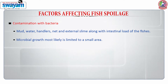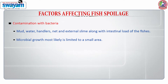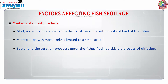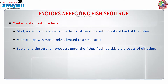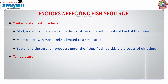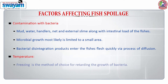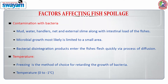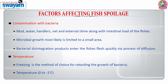Microbial growth is usually limited to a small area in the fish, and the bacterial disintegration products enter the fish flesh very quickly via the process of diffusion, and as a result the fish spoils. Temperature also plays a very critical role in extending the shelf life of fish. Freezing is usually the method of choice for retarding the growth of bacteria; the favorable temperature is 0 to minus 1 degree C, where we can stop the activity of microorganisms and hence control the spoilage.